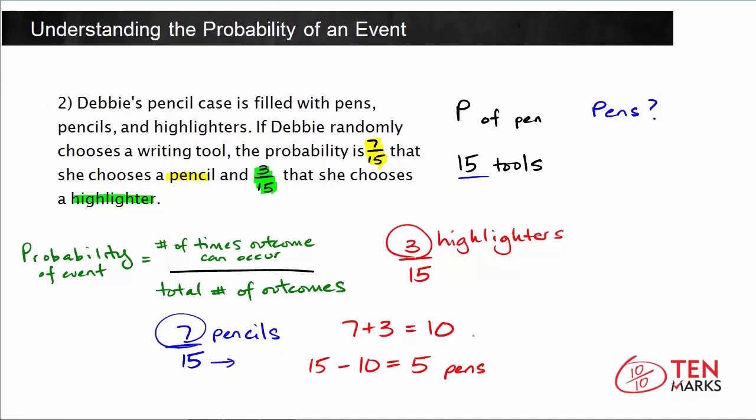So now let's just continue on up here. We're going to find the probability of getting a pen. The number of times that it can occur is 5 because there are 5 pens, and the total number of writing tools or outcomes is 15, which means the probability of choosing a pen at random would be five-fifteenths.